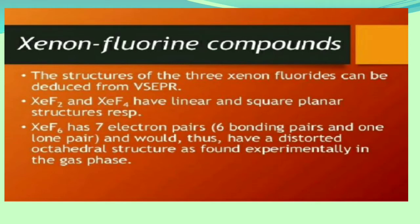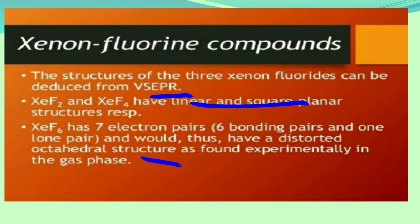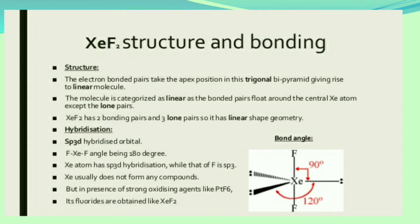The structure of these three xenon fluorides can be deduced from VSEPR theory. XeF2 has a linear structure and XeF4 has a square planar structure. XeF6 has seven electron pairs — six bonding pairs and one lone pair — giving it a distorted octahedral structure. Let us now see their structure and bonding.